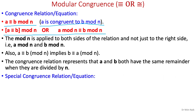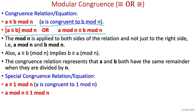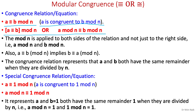Let's look at one special case of the congruence relation. That is, a is congruent to 1 mod n, and we can write for our understanding: a mod n is congruent to 1 mod n. That means a and b equals 1 both have the same remainder 1 when they are divided by n. That is, a mod n equals 1 and 1 mod n equals 1.